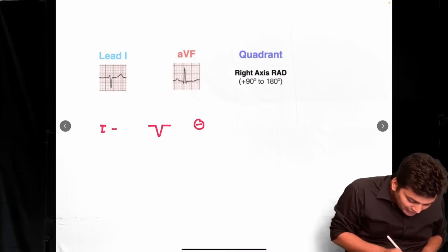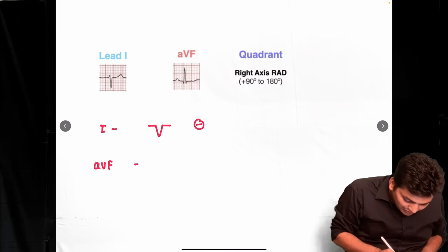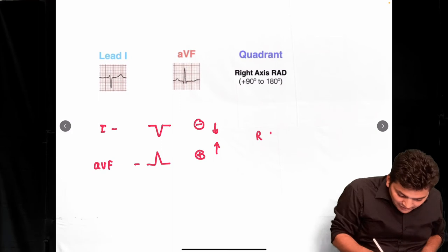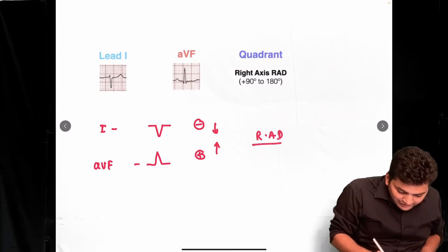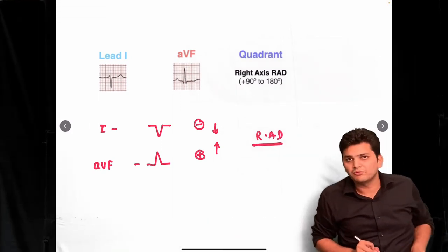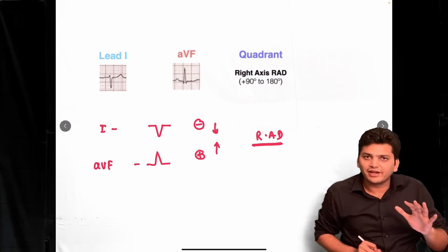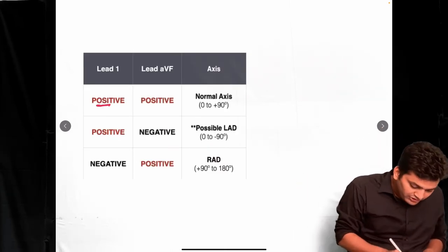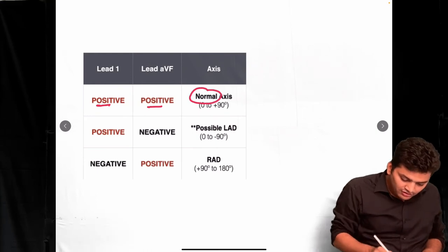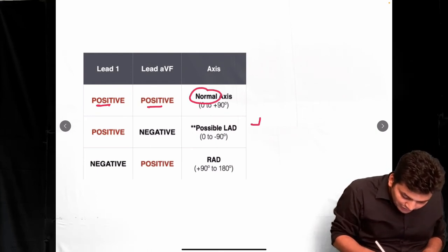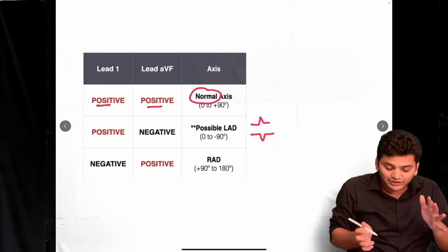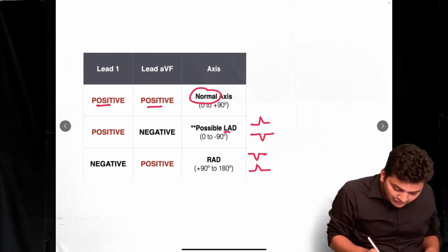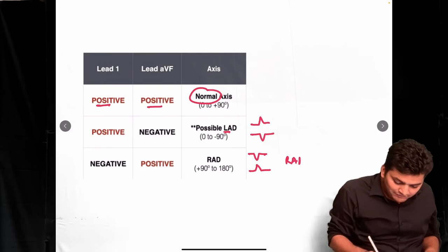If Lead I has a negative deflection and AVF has a positive deflection — meaning they are going towards one another — this is right axis deviation. Summary: both positive means normal axis; leaving one another means left axis deviation; going towards one another means right axis deviation.